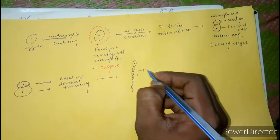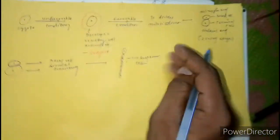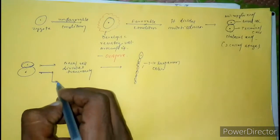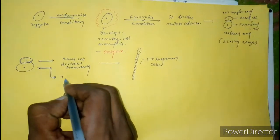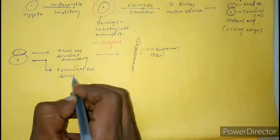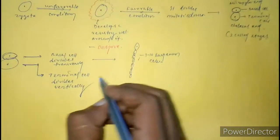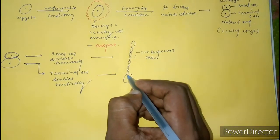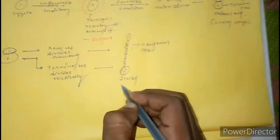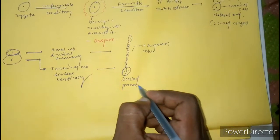Here will be the 7 to 10 suspensor cells. And the terminal cell divides vertically to form a 2-cell pro-embryo. Here will be the complete 2-cell pro-embryo.